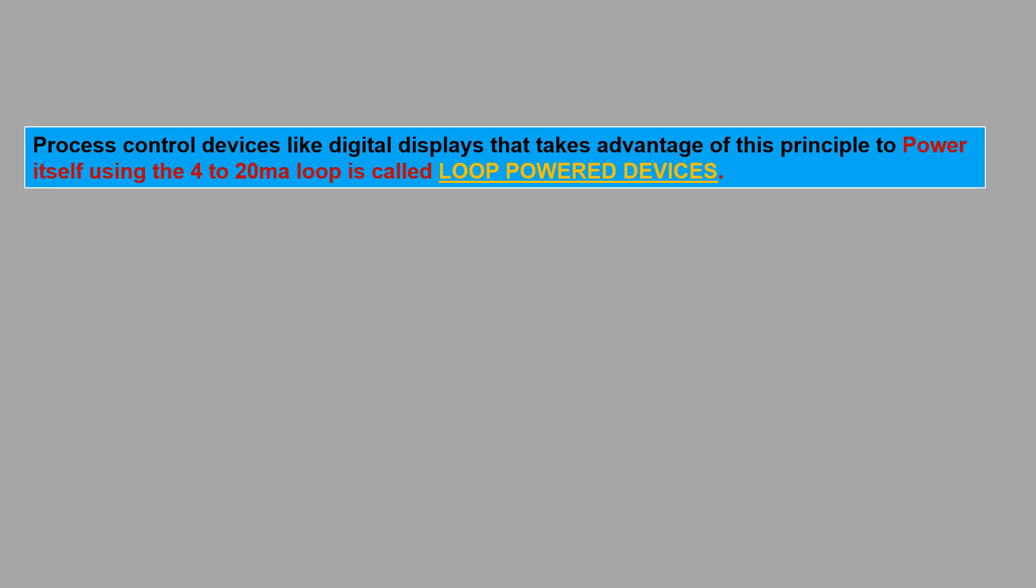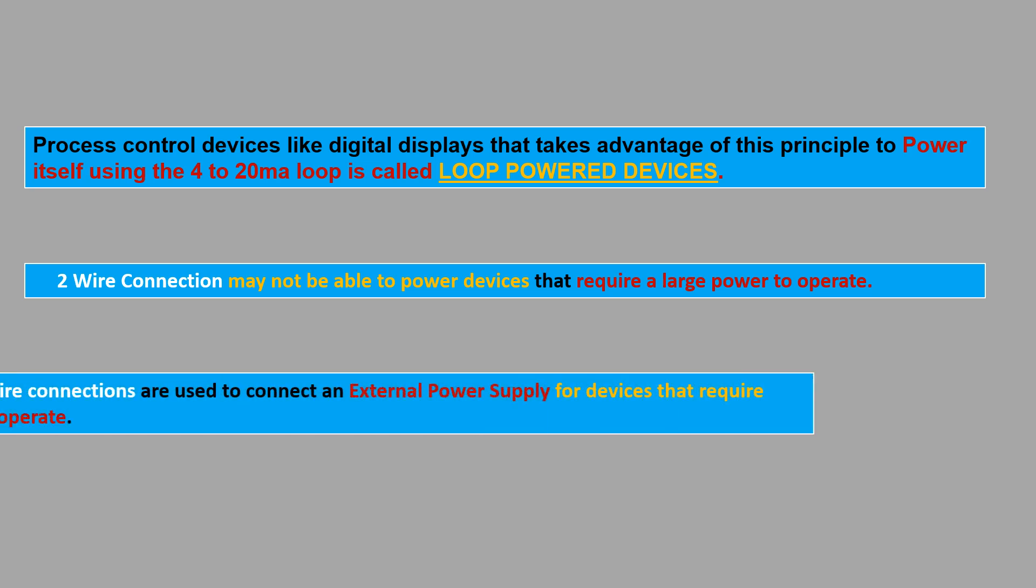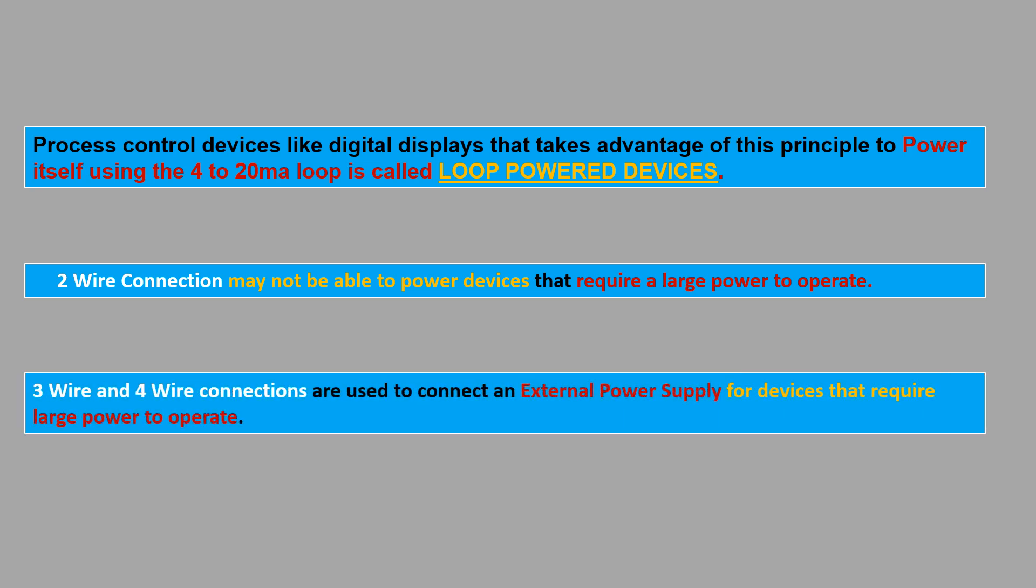Loop-powered instruments consume very little power in order to be able to operate with the power supplied to the loop. A 2-wire connection may not be able to power devices that require a large power to operate. So, a 3-wire or 4-wire connections are used to connect an external power supply for devices that require large power to operate.